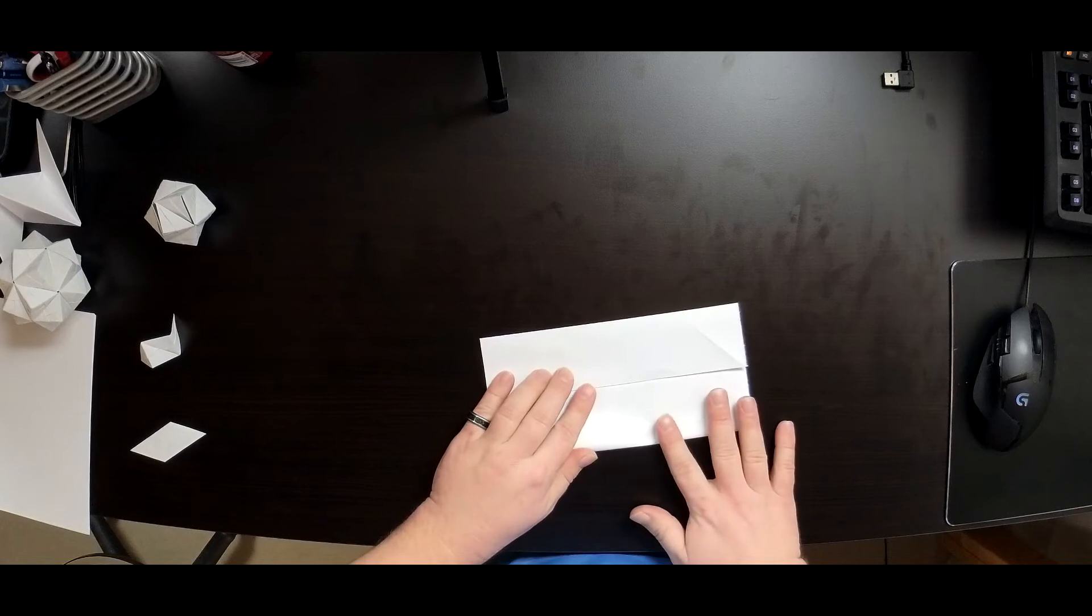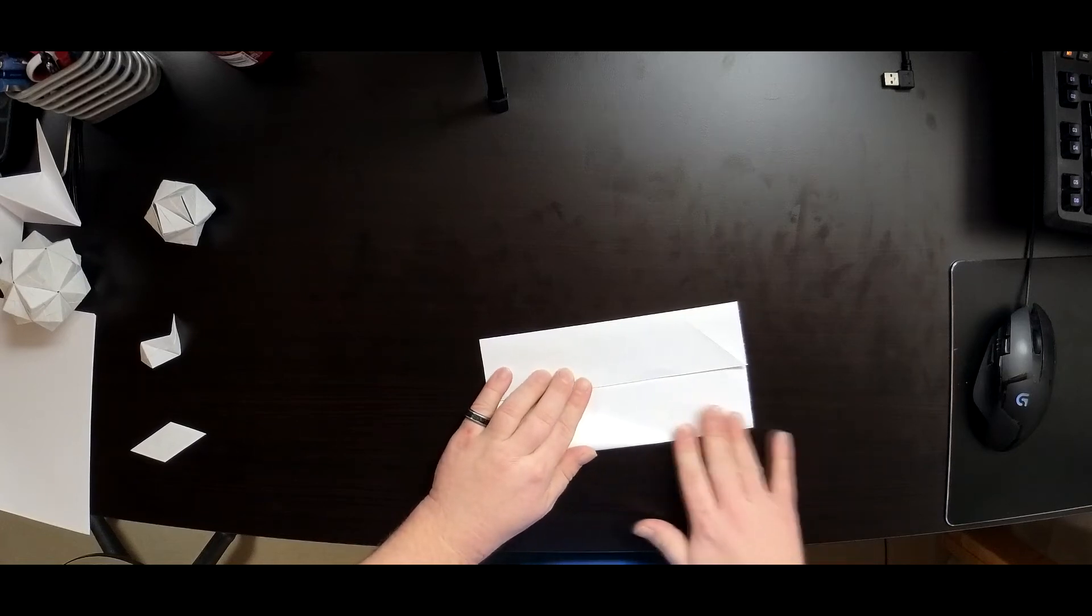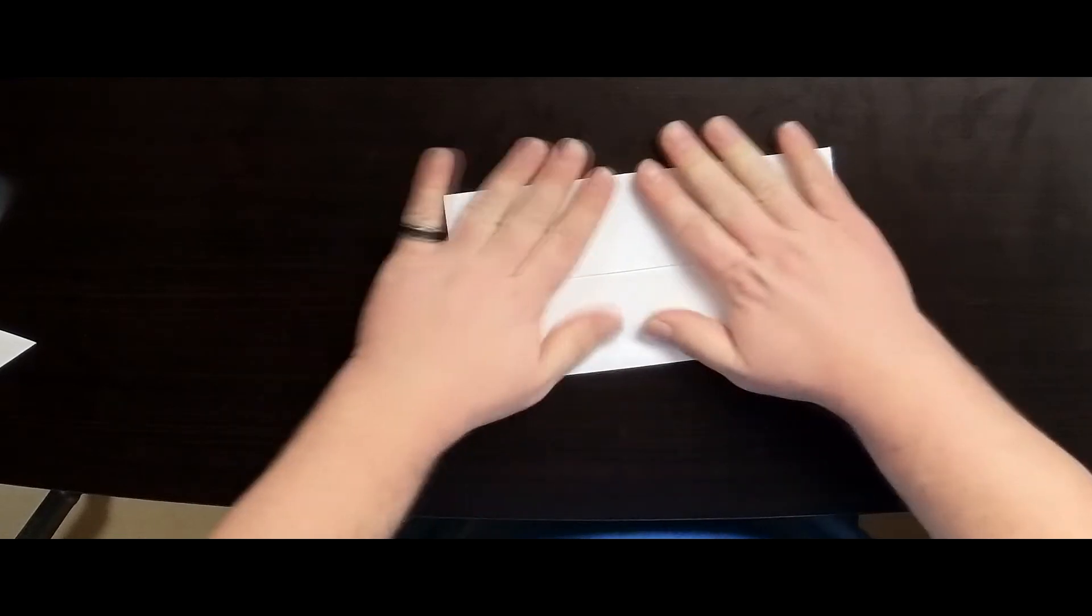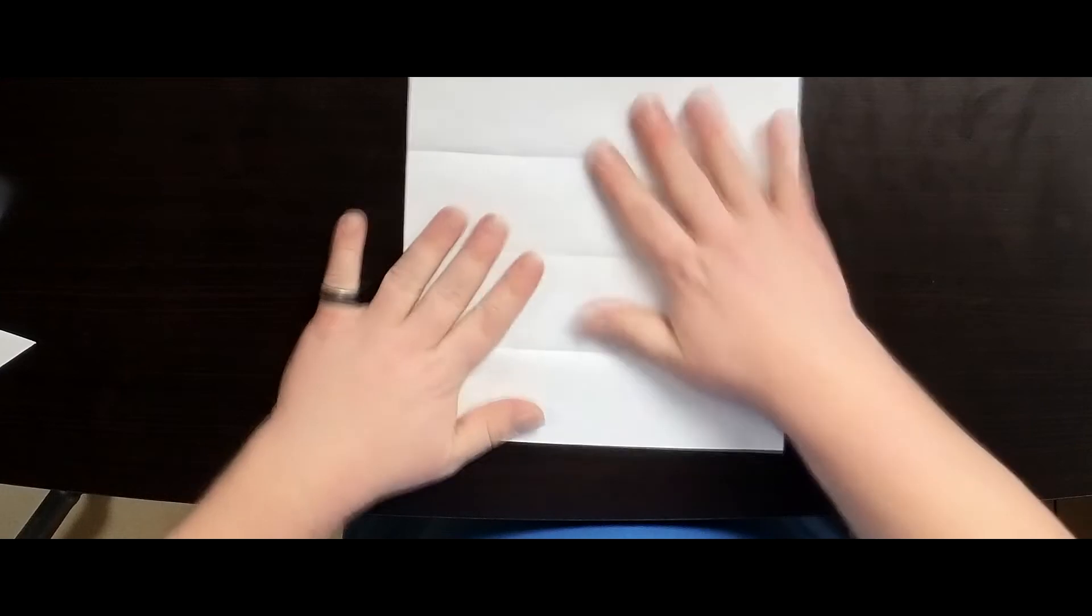And then I will do the same thing on the other side. Hey everybody, I put some puns at the end of the video, so stay tuned. Creating something like a center-type book. Okay, now we are going to open that back up and you got to pick two corners. I am going to pick these two.